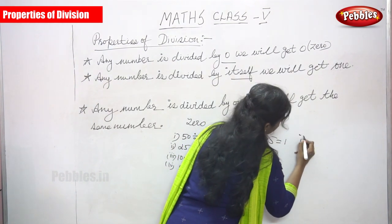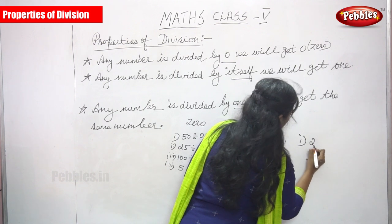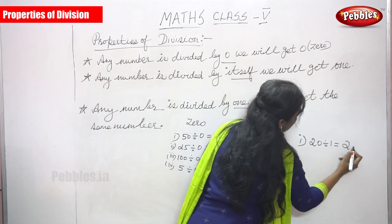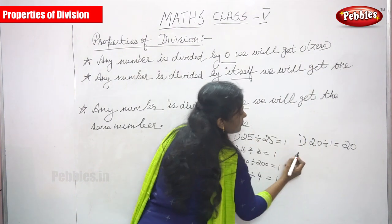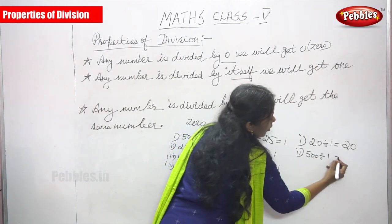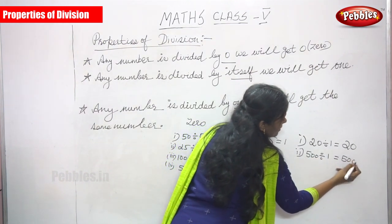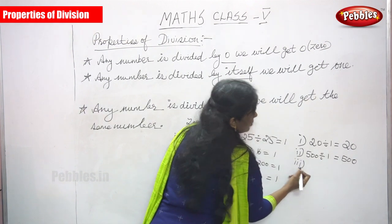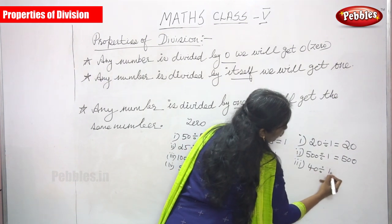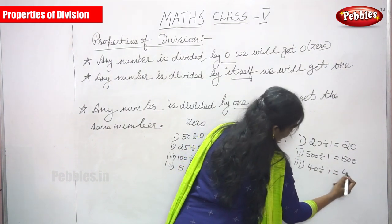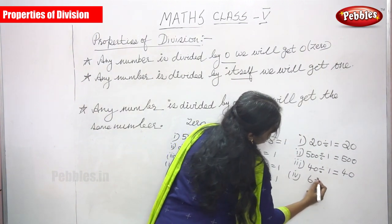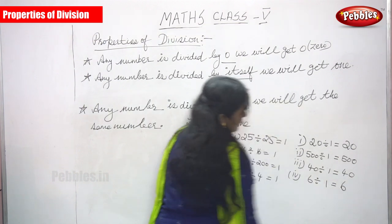For example, 20 divided by one you can get 20. Second one, 500 divided by one you can get 500. Third one, 40 divided by one you can get 40. Fourth one, six divided by one you can get six.